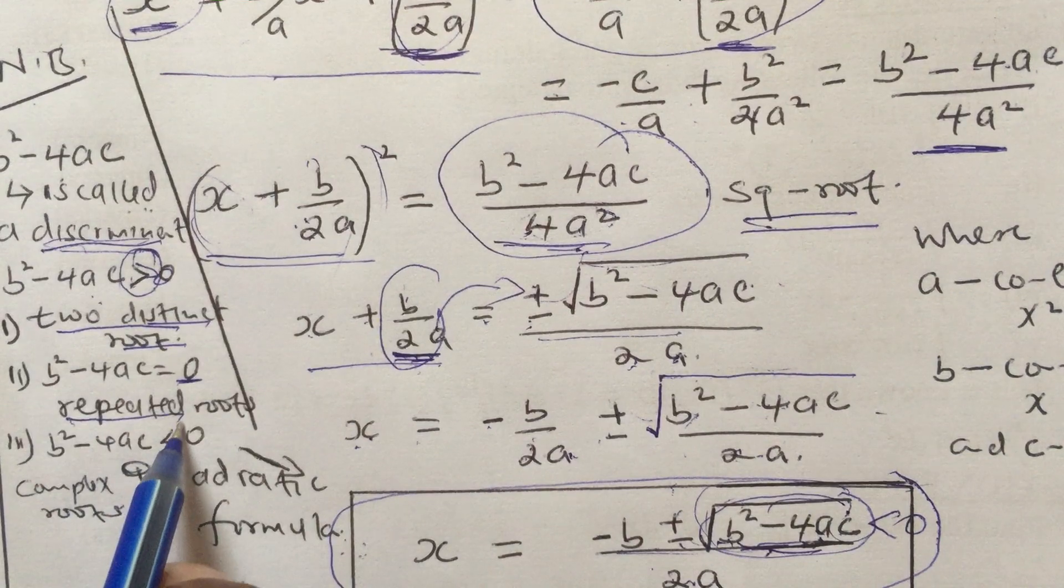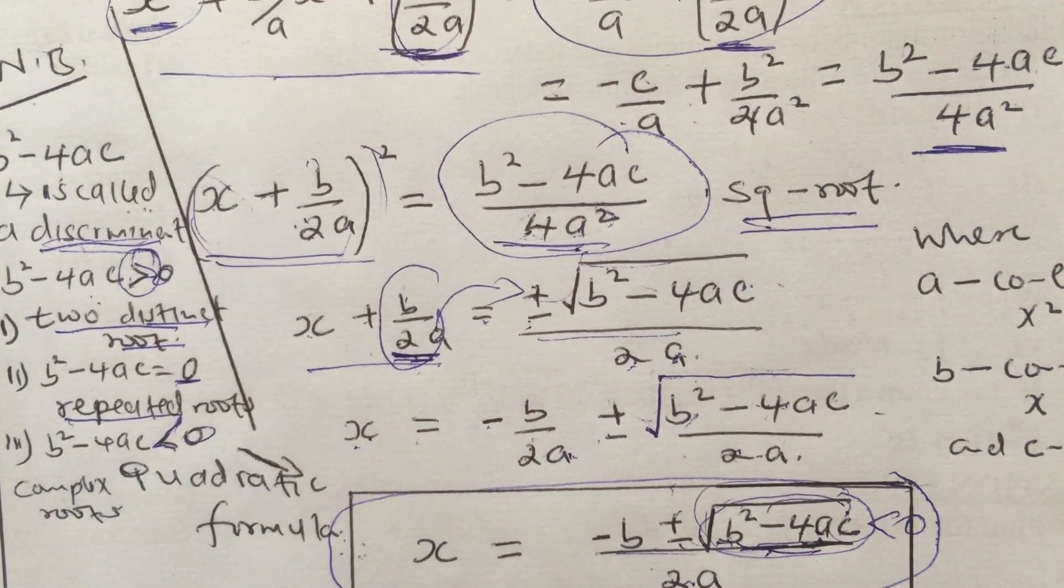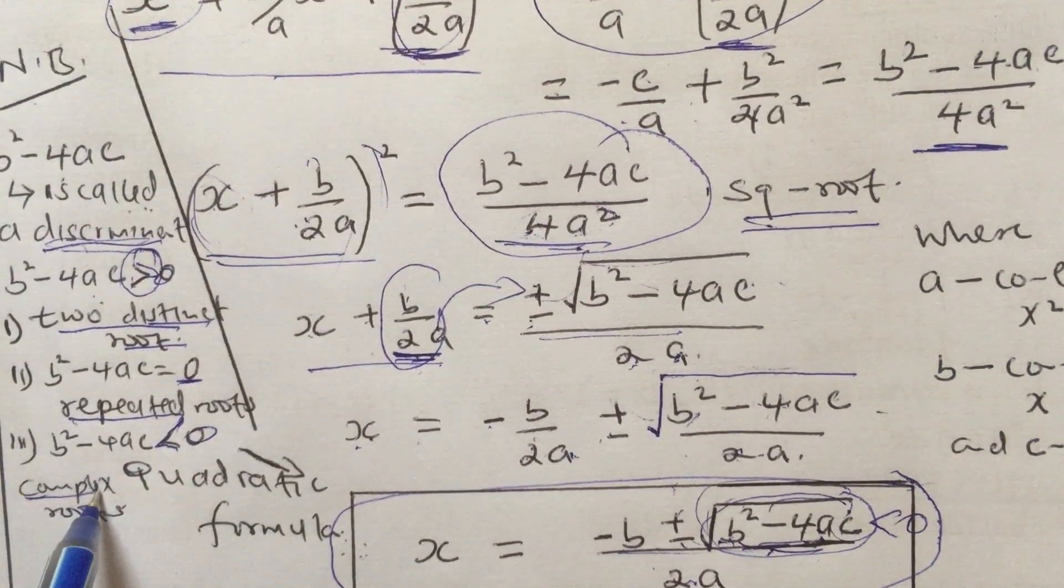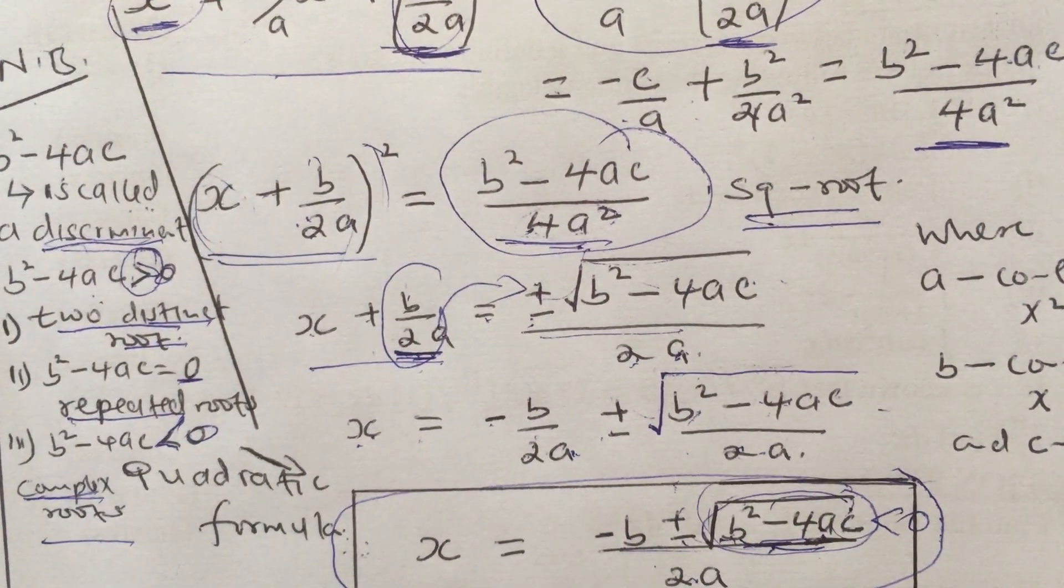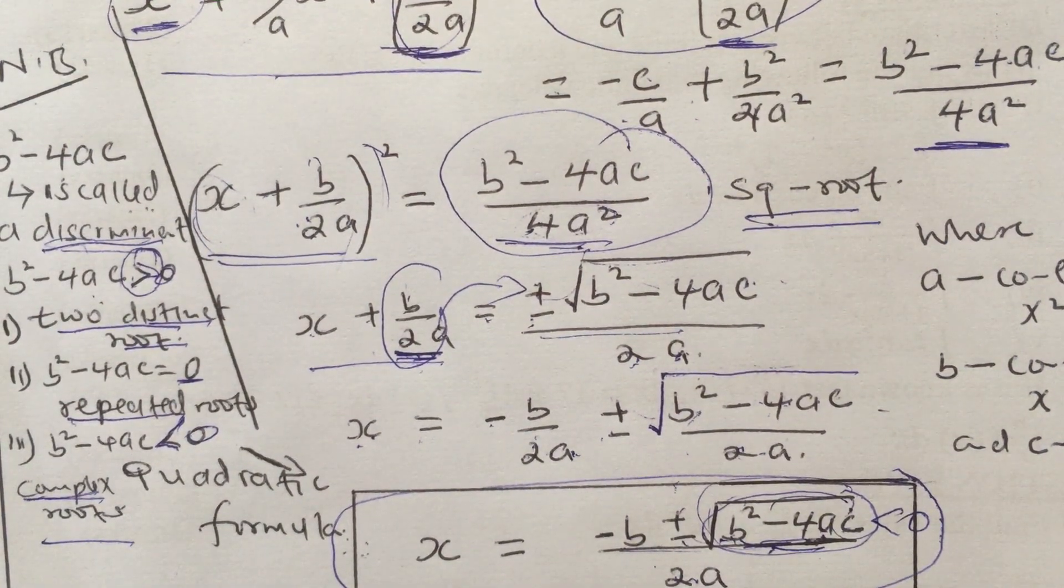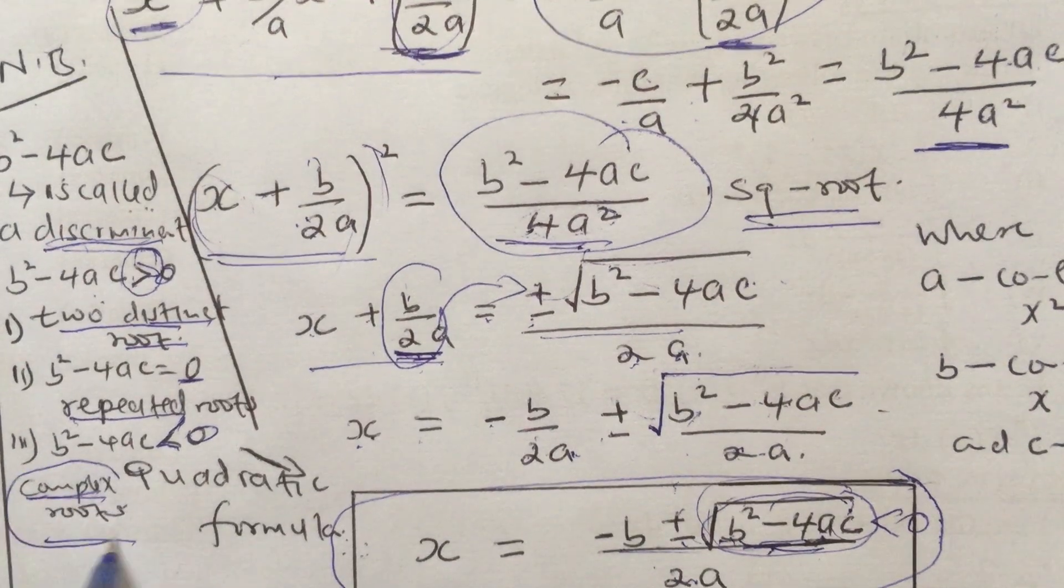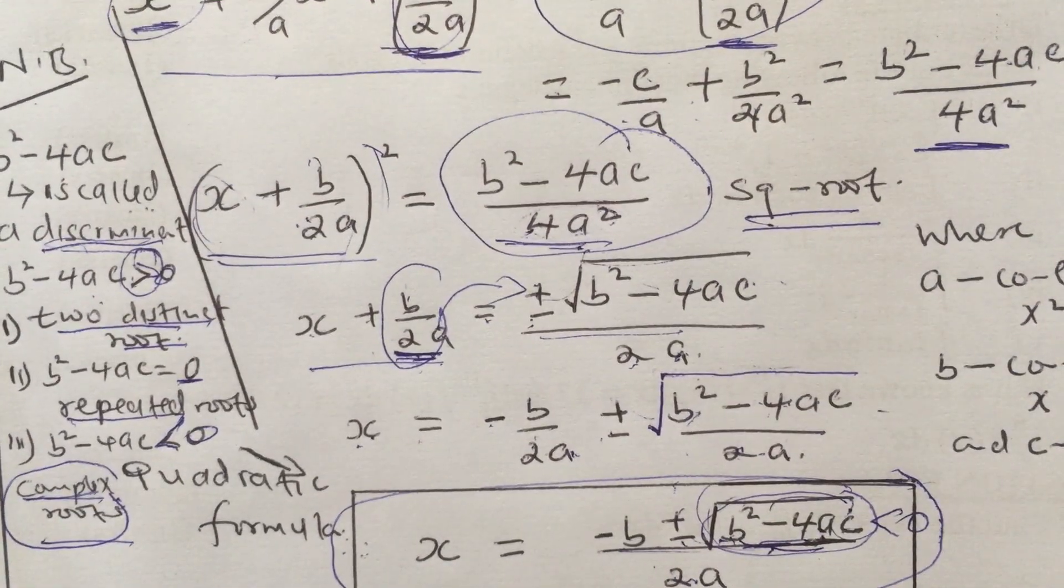And the last one: if the discriminant is less than zero, then we have what we call complex roots. Sometimes we say it has no solution, but it has what we call complex roots.